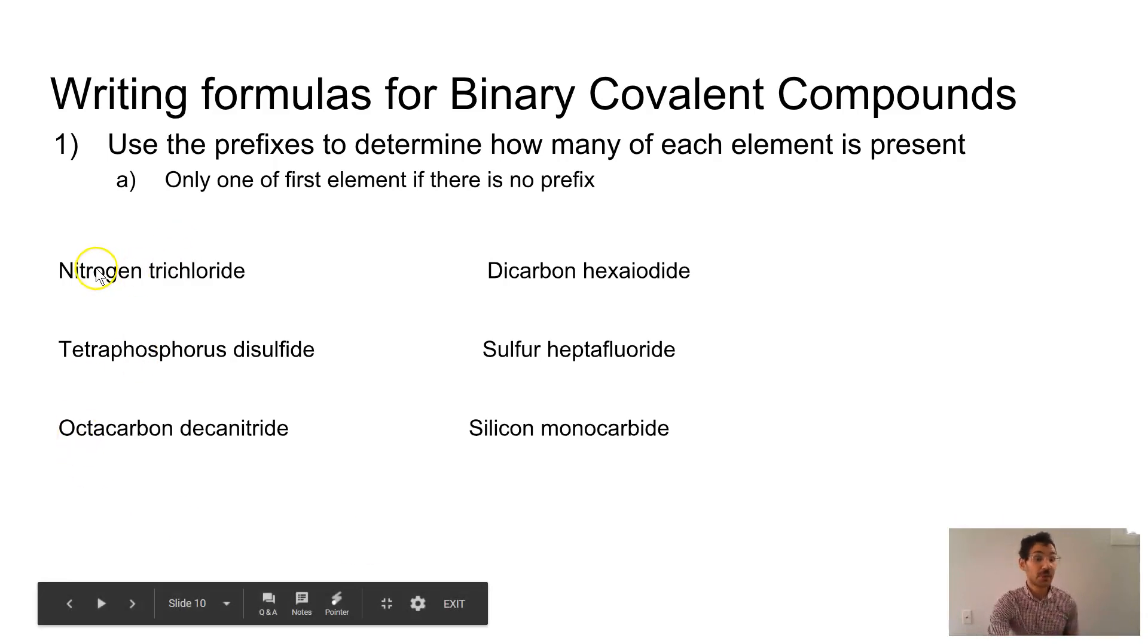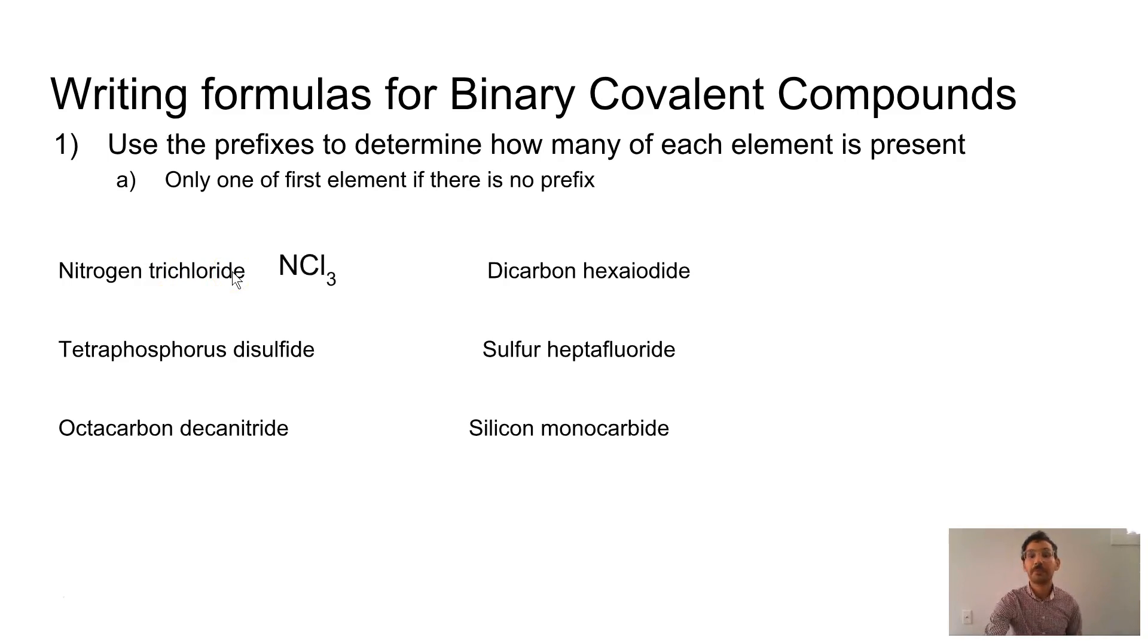Nitrogen trichloride. I know that there's just one nitrogen and three chlorines, so this should be NCl3. If I'm naming dicarbon hexaiodide, I know di tells me there's two carbons. Hexa tells me there's six iodides, which is an iodine or I. So this should be C2I6. If I'm naming tetraphosphorus disulfide, this tells me there's tetra, four phosphoruses. Di tells me there's two sulfurs. So P4S2. If I'm naming sulfur heptafluoride, this one's going to be sulfur, just one sulfur because there's no mono, and seven fluorides. If I've got octocarbon decanitride, octa tells me there's eight carbons. Deca tells me there are 10 nitrogens. So C8N10, wow. And if I've got silicon monocarbide, silicon, since there's no prefix, I know there's one of them. Monocarbide tells me there's one carbon. So this would be SiC. Cool. SiC.